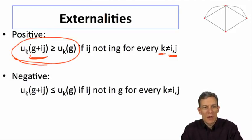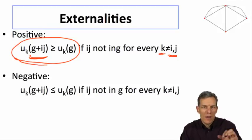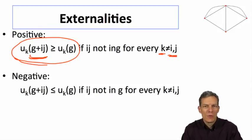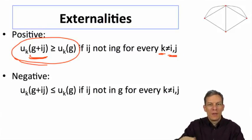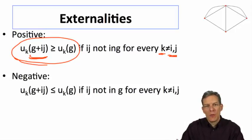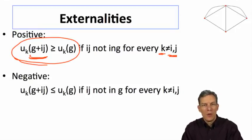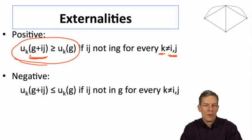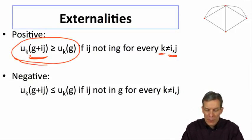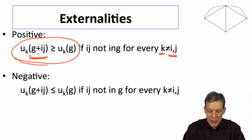The connections model had positive externalities. Every time we add a link between two individuals, that either shortens paths or keeps them the same for other individuals — nobody's hurt and sometimes they're actually helped. So that's positive externalities.